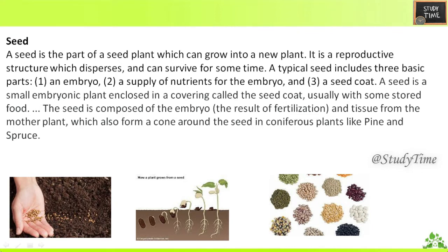We are going to read about a seed and how it grows into a plant. A seed is the part of a seed plant which can grow into a new plant. It is a reproductive structure which disperses and can survive for some time. A typical seed includes three basic parts: the embryo, a supply of nutrients for the embryo, and a seed coat. A seed is a small embryonic plant enclosed in a covering called the seed coat, usually with some stored food. The seed is composed of the embryo and tissue from the mother plant, which also forms a cone around the seed in coniferous plants like pine and spruce.